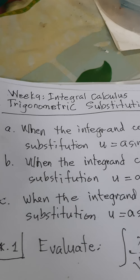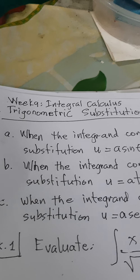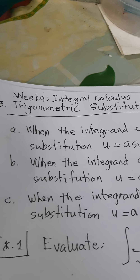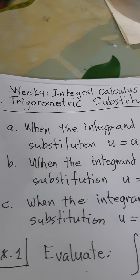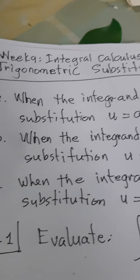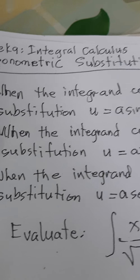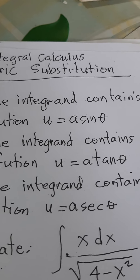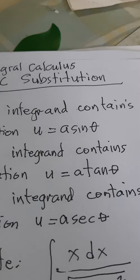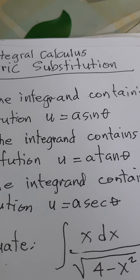There are three types of trigonometric substitution that we can use in solving or evaluating integrals. For letter A, when the integral contains A squared minus U squared, use the substitution U equals A sin theta. For letter B, when the integral contains U squared plus A squared, use U equals A tangent theta. For letter C, when the integral contains U squared minus A squared, use U equals A secant theta.